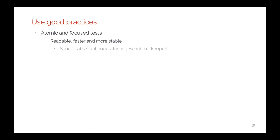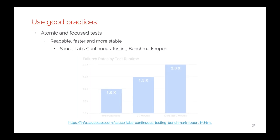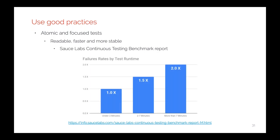In addition to that, we should always remember good practices — for example, using atomic and focused tests. When you have an atomic and focused test, it is more readable, normally faster, and more stable. At Sauce Labs we recently created the Sauce Labs Continuous Testing Benchmark, and from millions of tests executed every month, our data science team found that if a test lasts less than two minutes it's less likely to fail, and if it lasts more than seven minutes it's two times more likely to fail. This means atomic and focused tests lead to better automation and faster feedback.